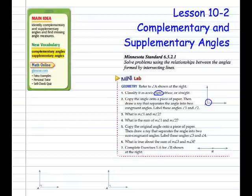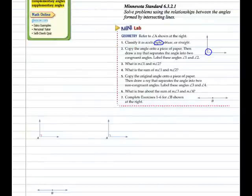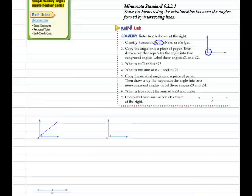Copy the angle onto a piece of paper, then draw a ray that separates the angle into two congruent angles. Label these Angle 1 and Angle 2. Now we've copied the angle down here. We're going to use our line tool to try and separate this into two congruent angles. That looks pretty close. This would be Angle 1, and this would be Angle 2.